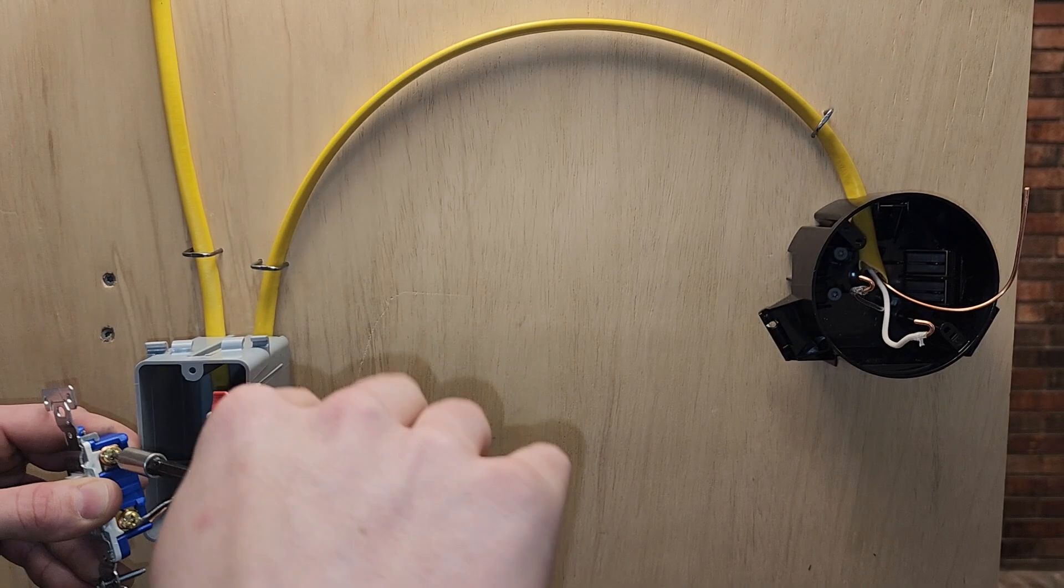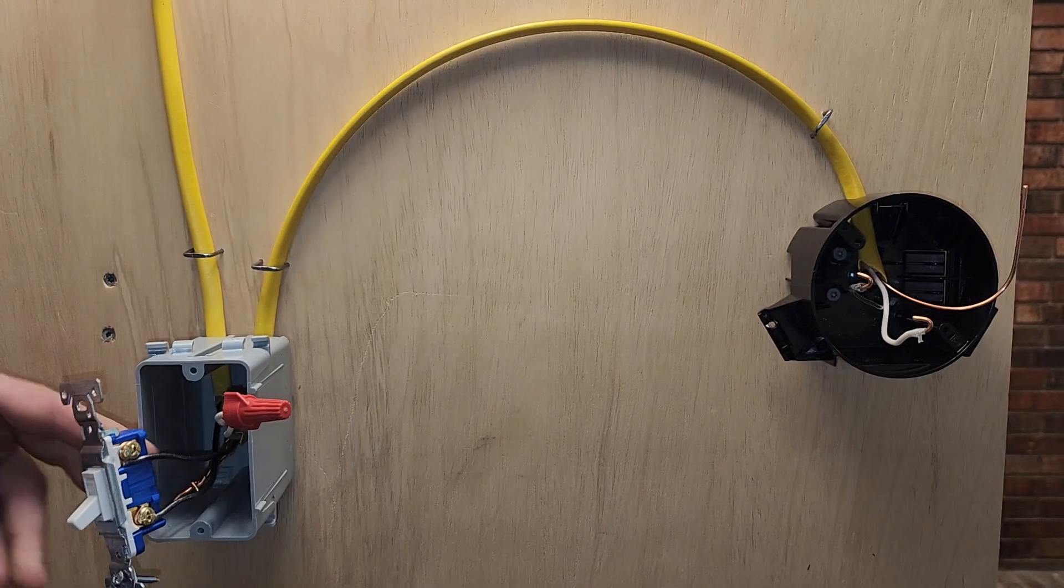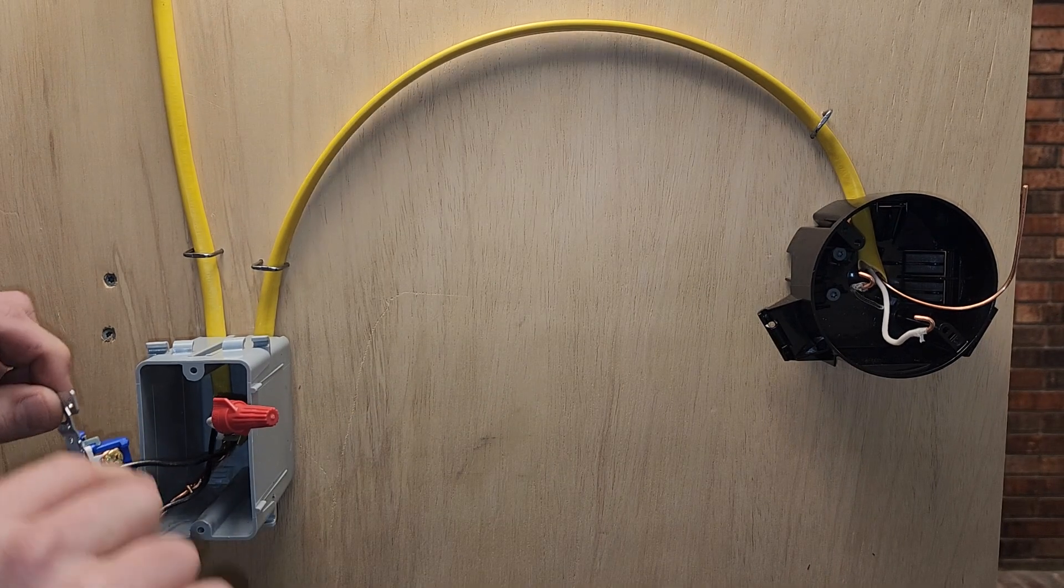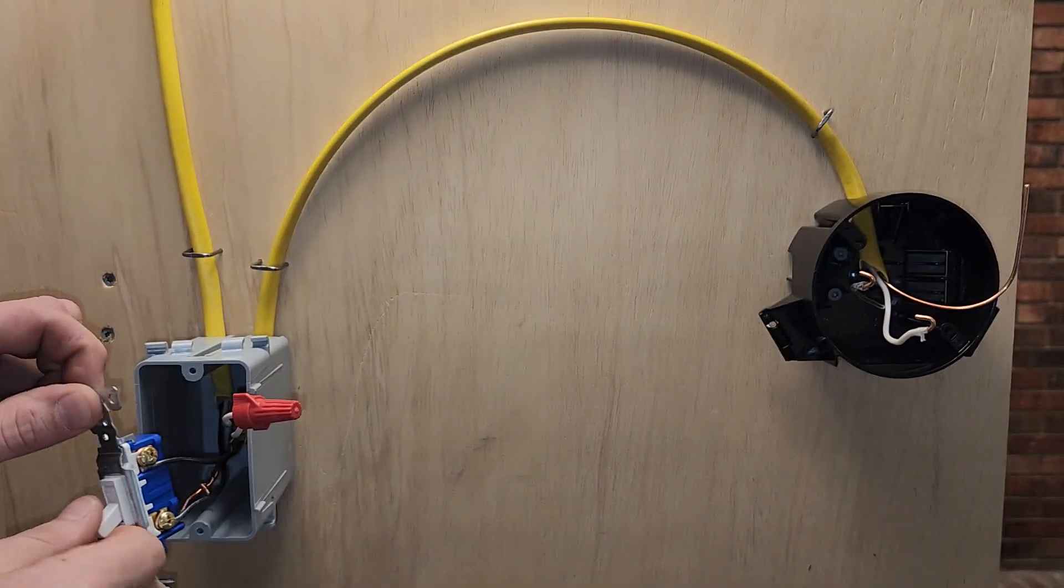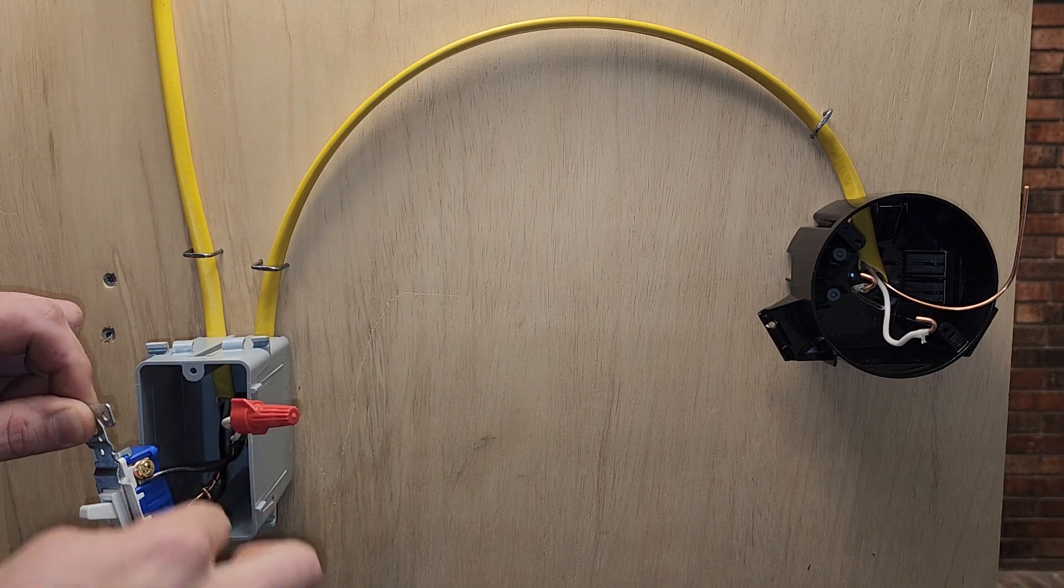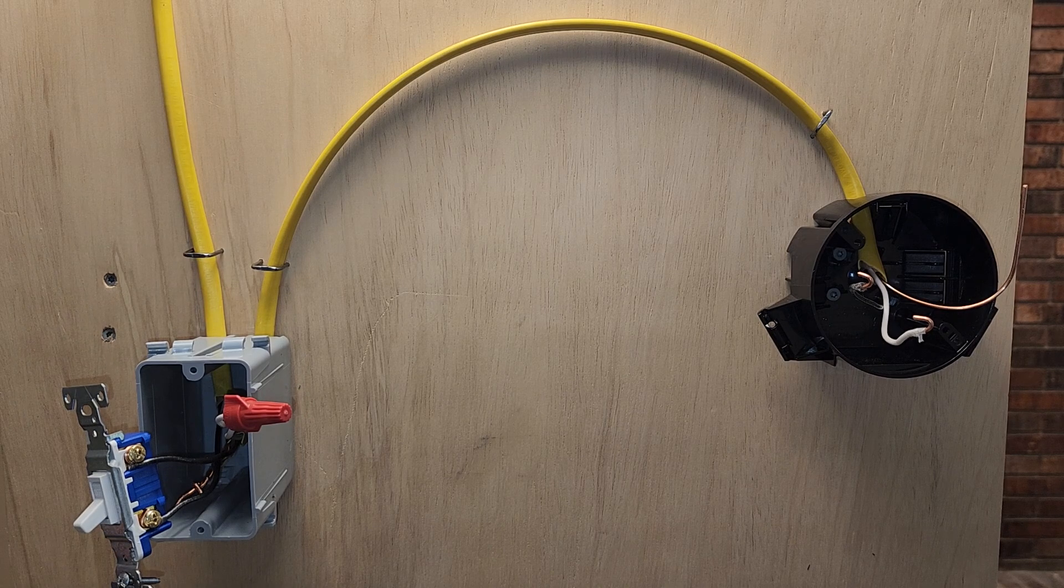And all this switch is doing is, when the switch is off, it's breaking that circuit so you can't get current to this light. And as soon as you turn this switch on, you're closing that circuit, allowing the current to flow through. And that's it. Moving on to the light,